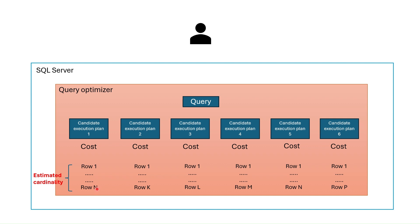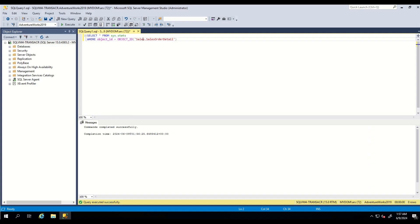The execution plan with the lowest cost is chosen and the query is run based on this plan. As you can see, cardinality estimation is an important process. If SQL Server cannot estimate cardinality correctly, a wrong execution plan is chosen — your query runs with an inefficient plan and you face latency. SQL Server uses statistics to estimate cardinality, and in this session we will deeply understand these statistics.